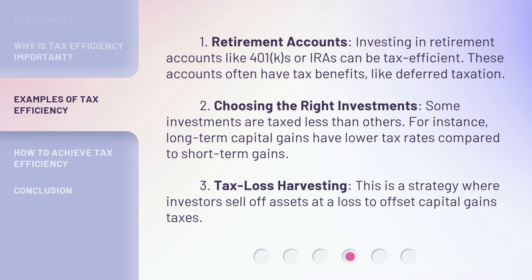1. Retirement Accounts: Investing in retirement accounts like 401(k)s or IRAs can be tax efficient. These accounts often have tax benefits, like deferred taxation. 2. Choosing the right investments: Some investments are taxed less than others. For instance, long-term capital gains have lower tax rates compared to short-term gains. 3. Tax Loss Harvesting: This is a strategy where investors sell off assets at a loss to offset capital gains taxes.